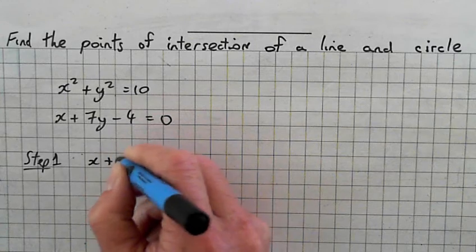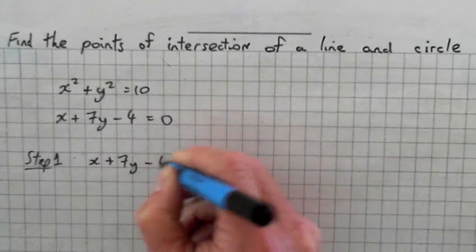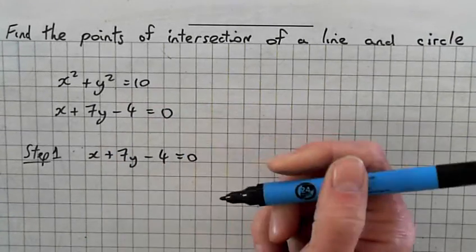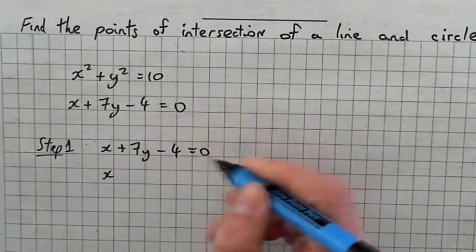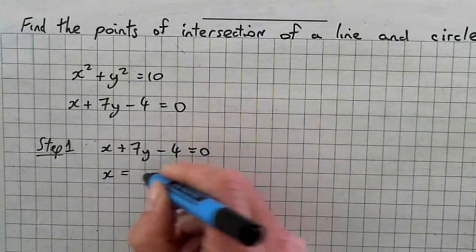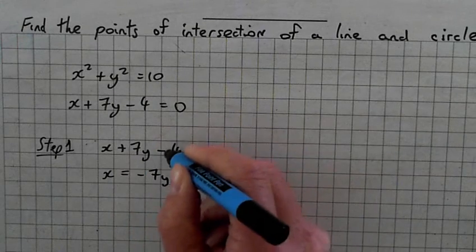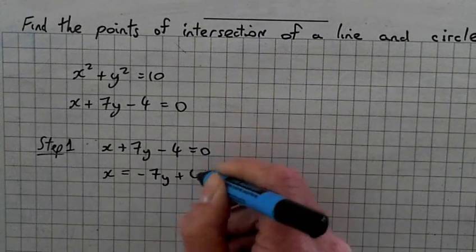So I'll take this, and it's easier. X is already singular, so leave X on the left hand side. So the plus 7y becomes minus 7y. Minus 4, plus 4.